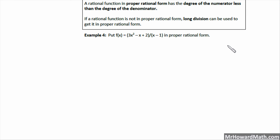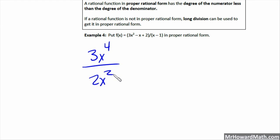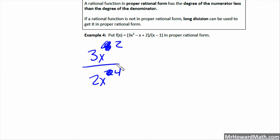A rational function is in proper rational form when the degree of the numerator is less than the degree of the denominator. If it is not, long division can be used to convert it. For example, 3x to the 4th over 2x squared is not in proper form because degree 4 is greater than degree 2. If the degrees were switched, with degree 2 in the numerator and degree 4 in the denominator, it would be in proper rational form. The smallest exponent must be in the numerator.